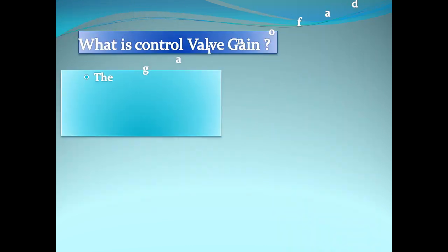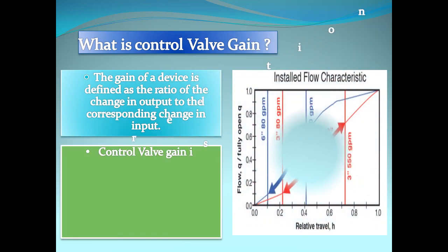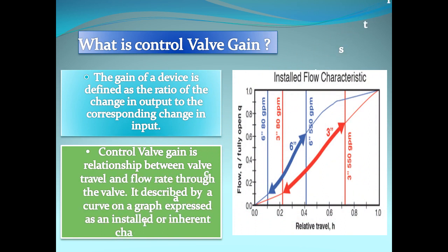What is control valve gain? The gain of a device is defined as the ratio of change in output to the corresponding change in input. Control valve gain is the relationship between valve travel and flow rate through the valve. It is described by a curve on a graph expressed as an installed or inherent characteristic.